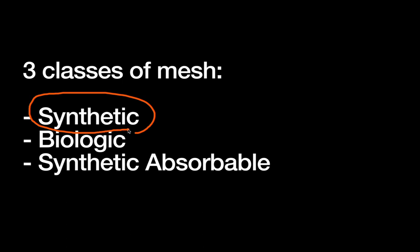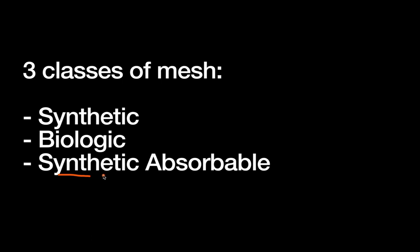There are three major classes of mesh. First is synthetic — the most common — which is a synthetic material, usually a type of plastic, placed permanently at the hernia site to last indefinitely. Biologic mesh comes from a biological tissue source such as pigs or cows, and will degrade over time. The idea is the body grows into it and fixes the hernia. Its advantage is that if placed in a contaminated field and it gets infected, it simply goes away rather than causing a permanently infected foreign body problem.